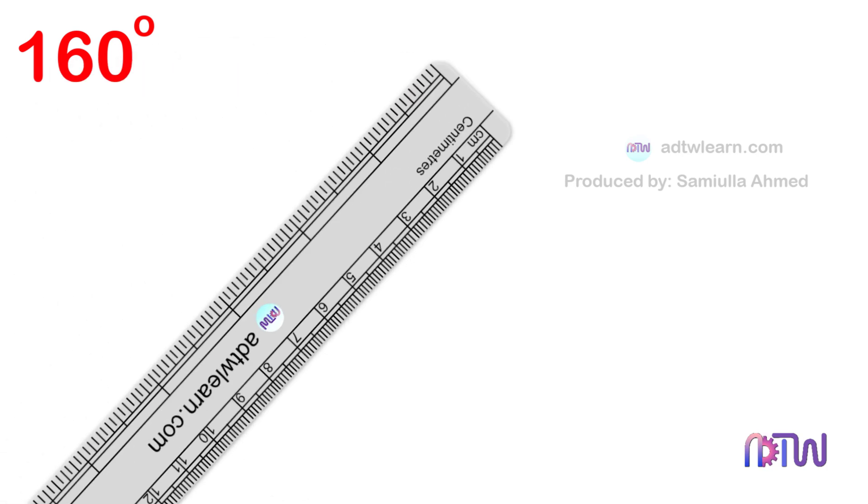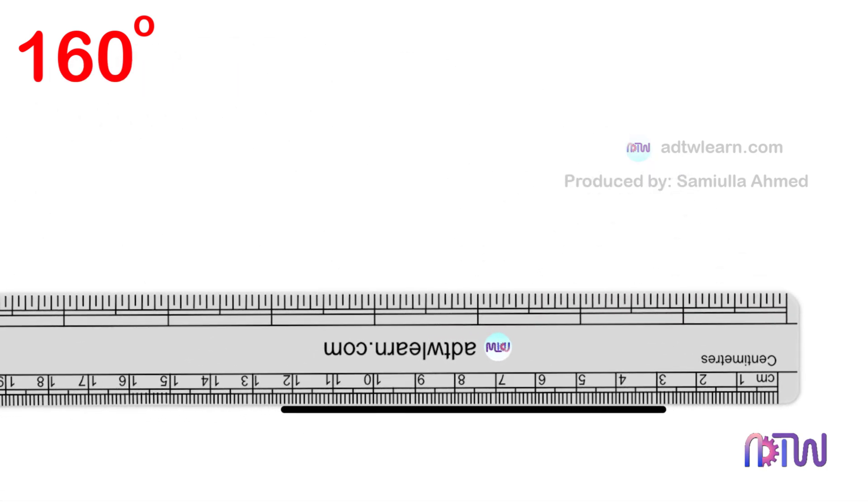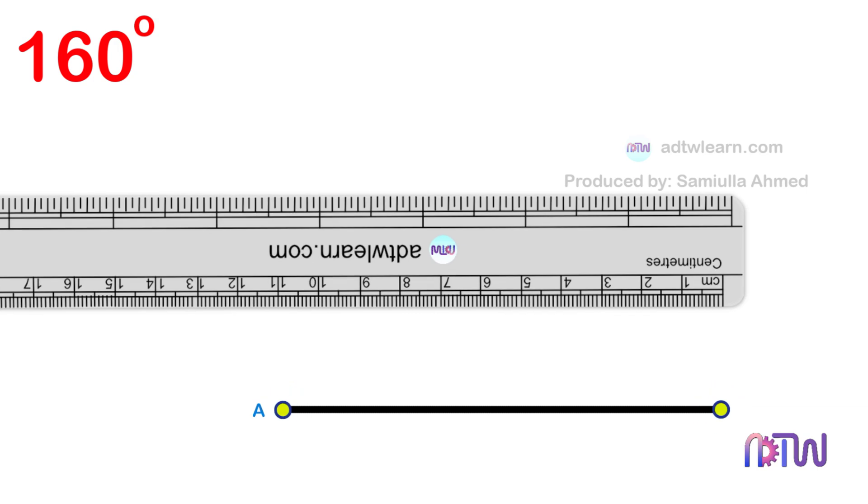First, we need to draw a line segment. Take a ruler and draw a line segment. Label the endpoints as A and B. Extend this line to a suitable length.